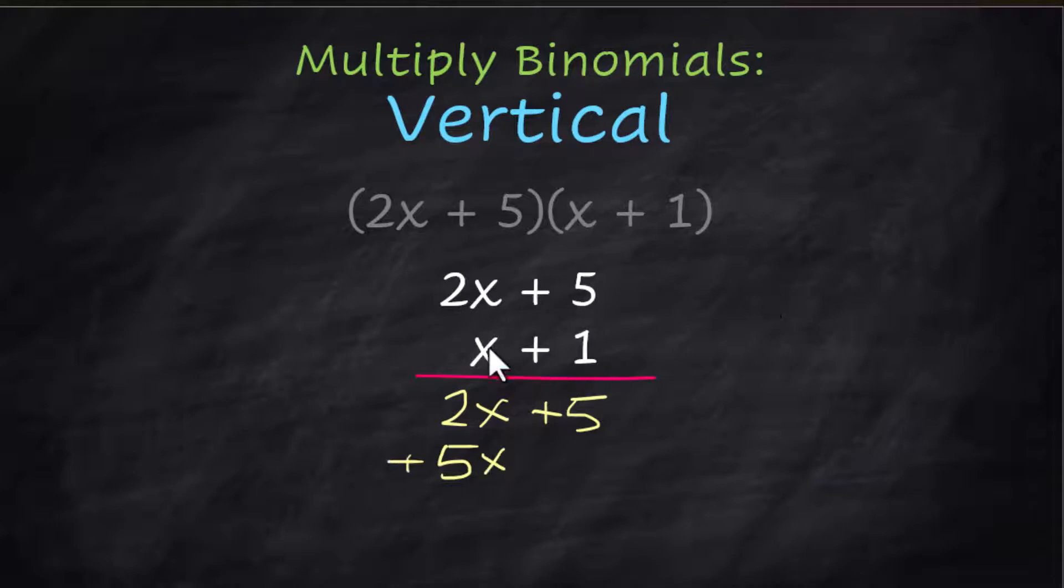Now multiply the x times the 2x, and you know that that's also positive, and it is a positive 2x squared. Now you're combining like terms, but you're going to be doing this vertically. So the 5 comes down, that's positive 5.